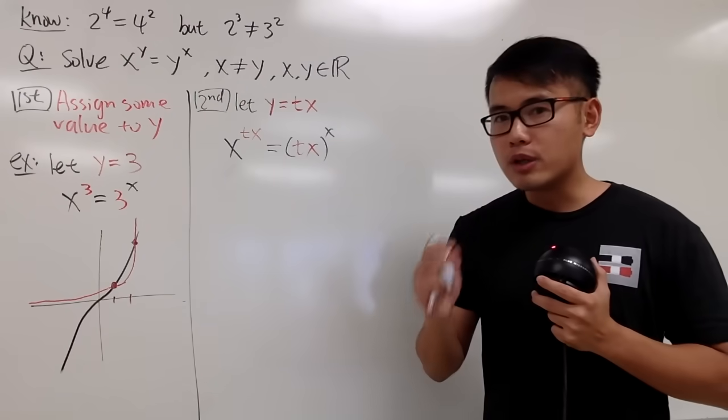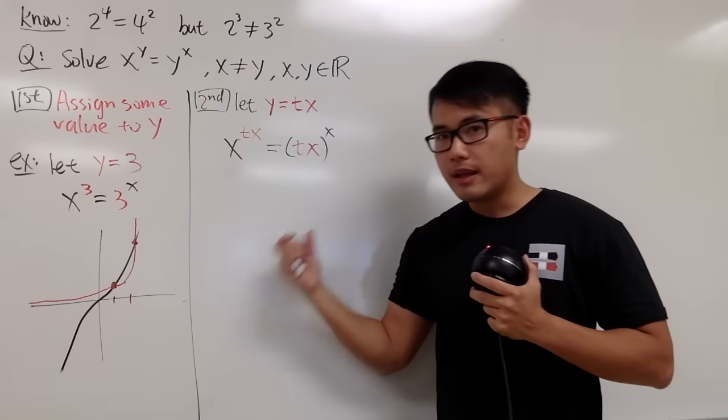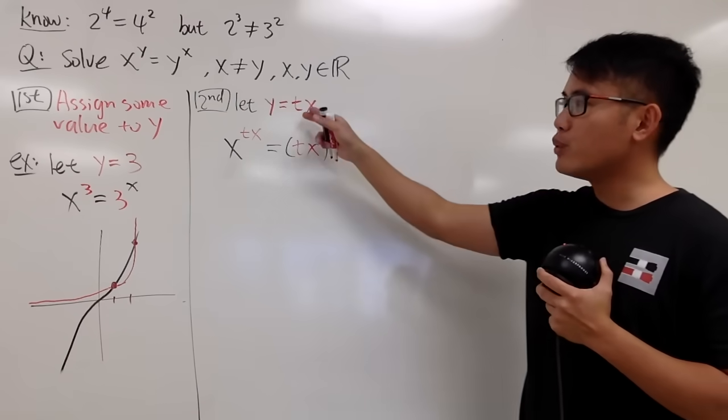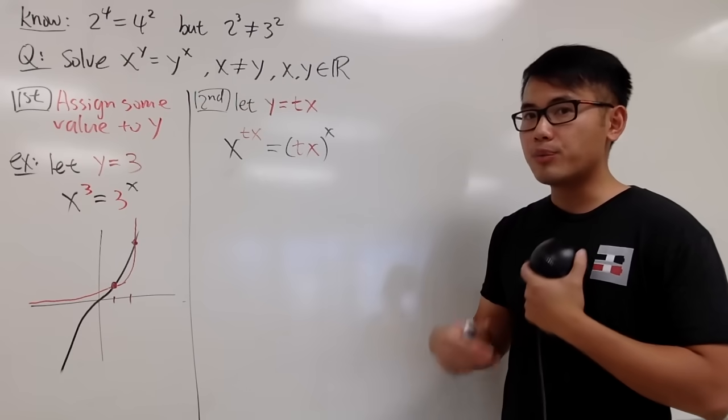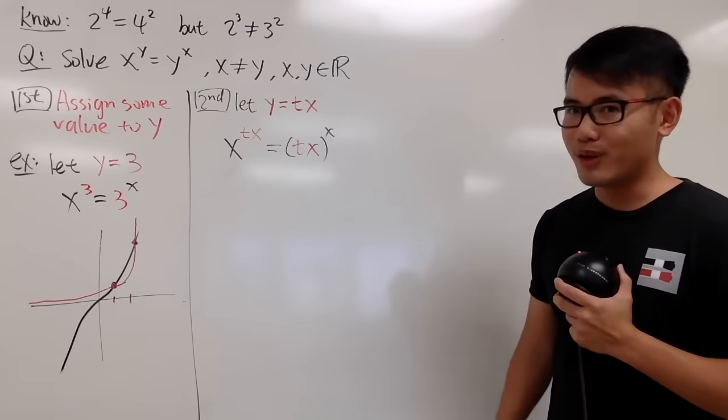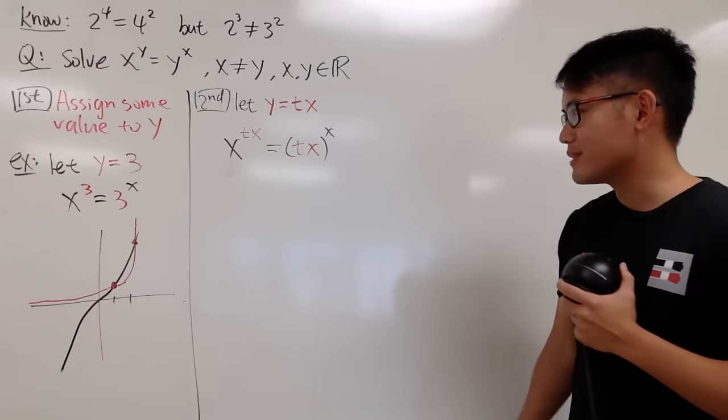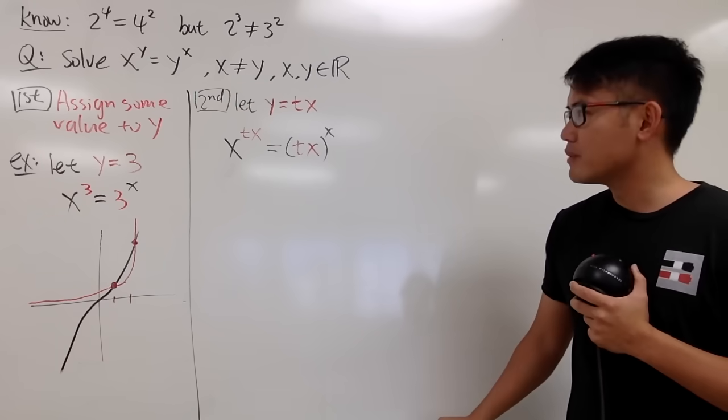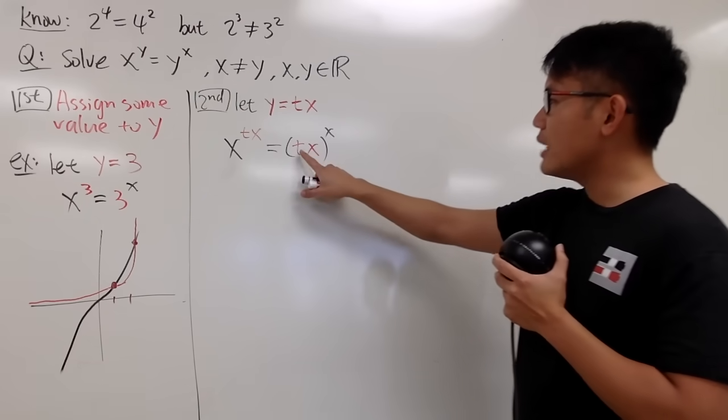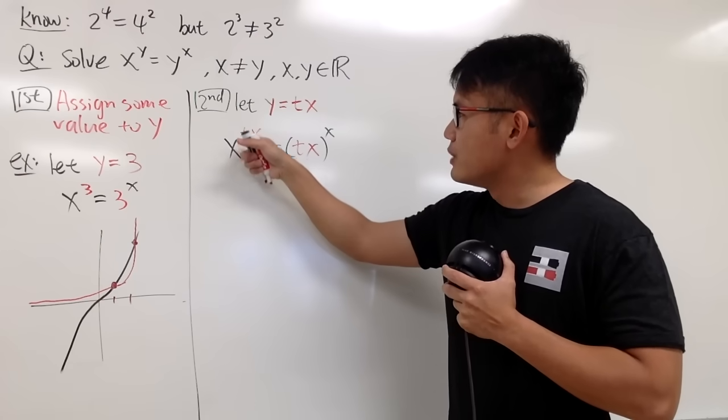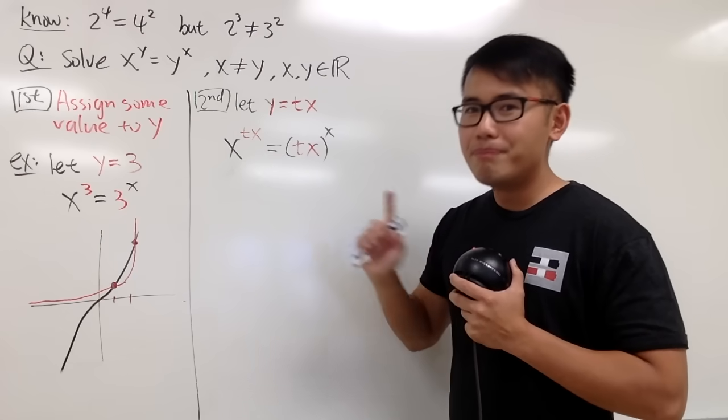Keep in mind, our goal is to actually solve for x. x has to be in terms of t. In that case, I can actually assign some values to t, and then I can produce the x. And I will do the same for y in a second as well. But let's focus on this first. How can we get x by itself? Well, notice the right-hand side, we have this to the x power. This is x to the t times x power.